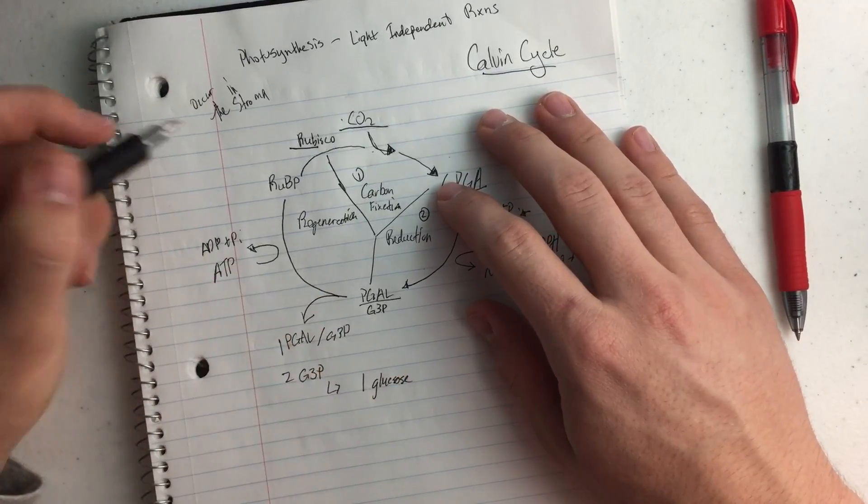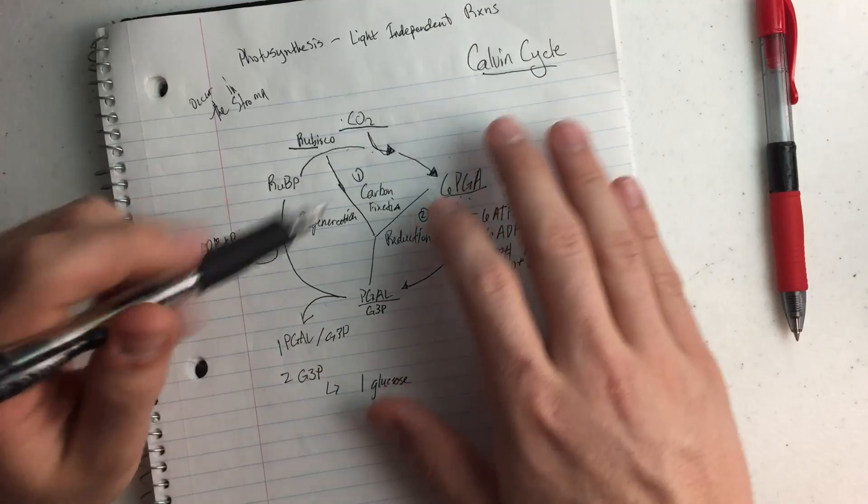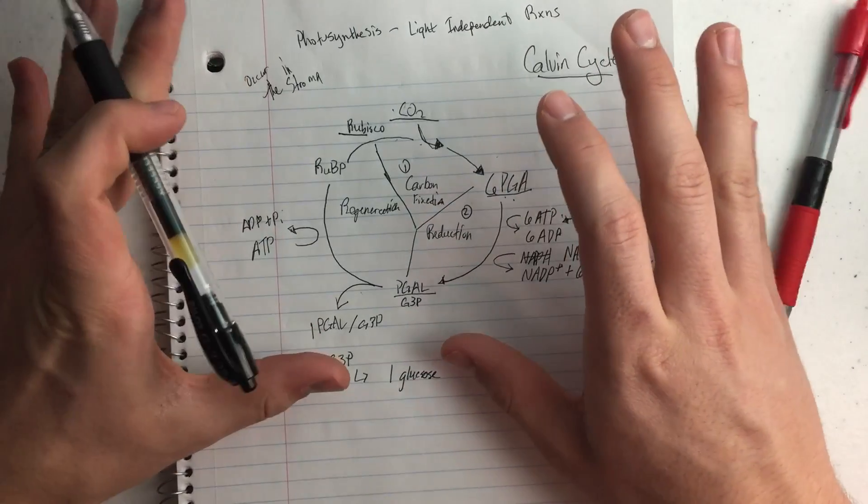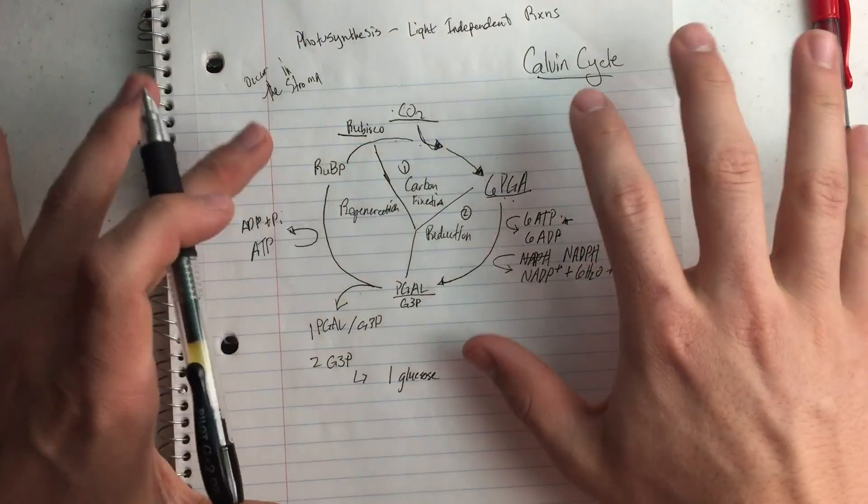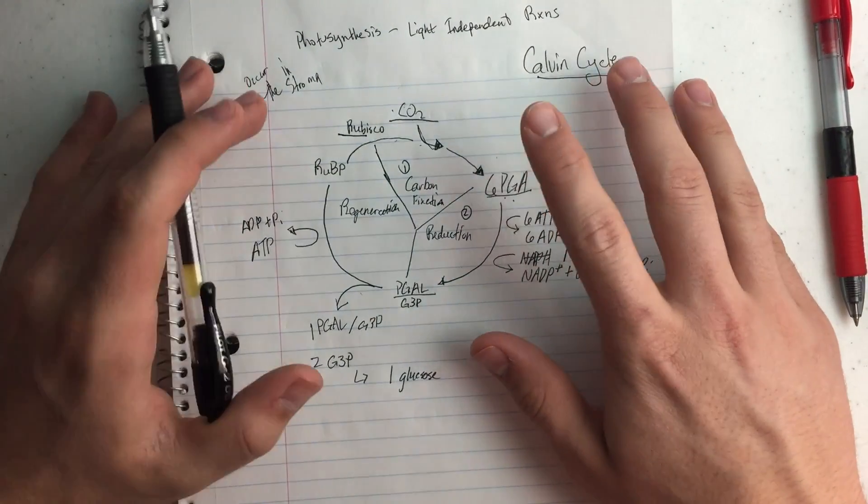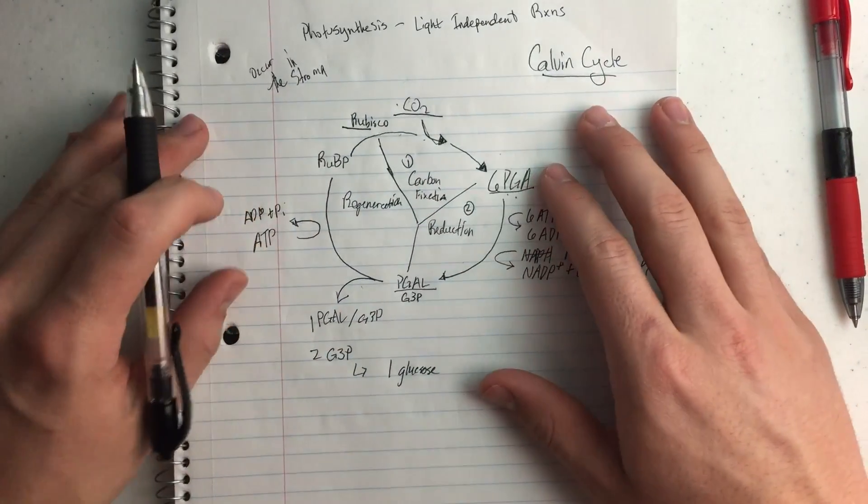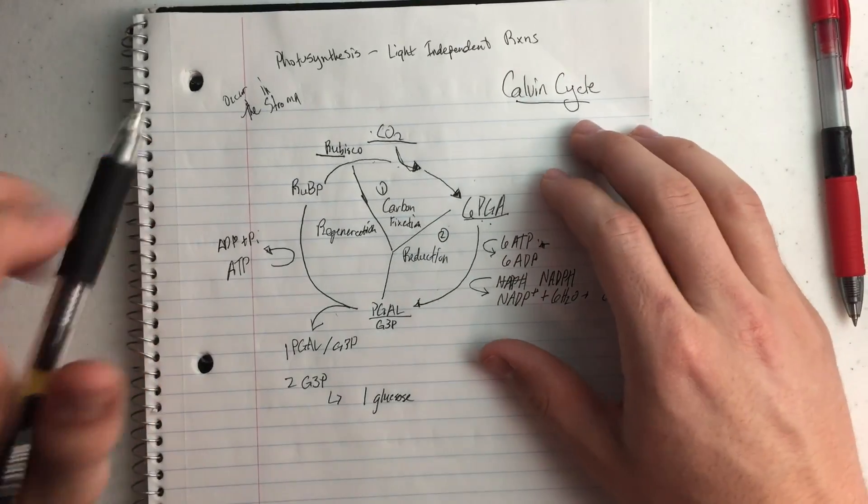So for 1 glucose to be made, this cycle has to go through twice, and that's just kind of a gist about what's going on here. And later I'll talk about all the numbers, and where that comes from, because remember, nothing is created nor destroyed, it's just moved around.